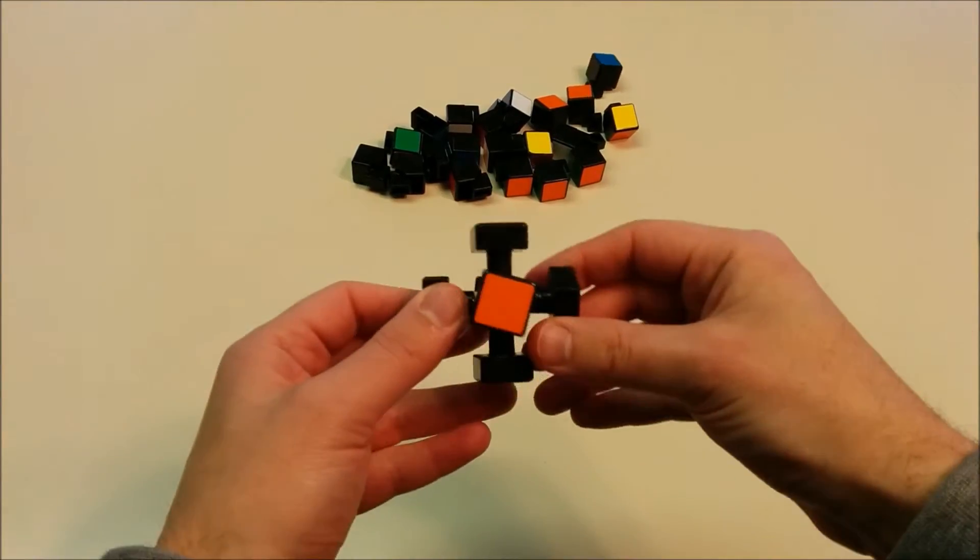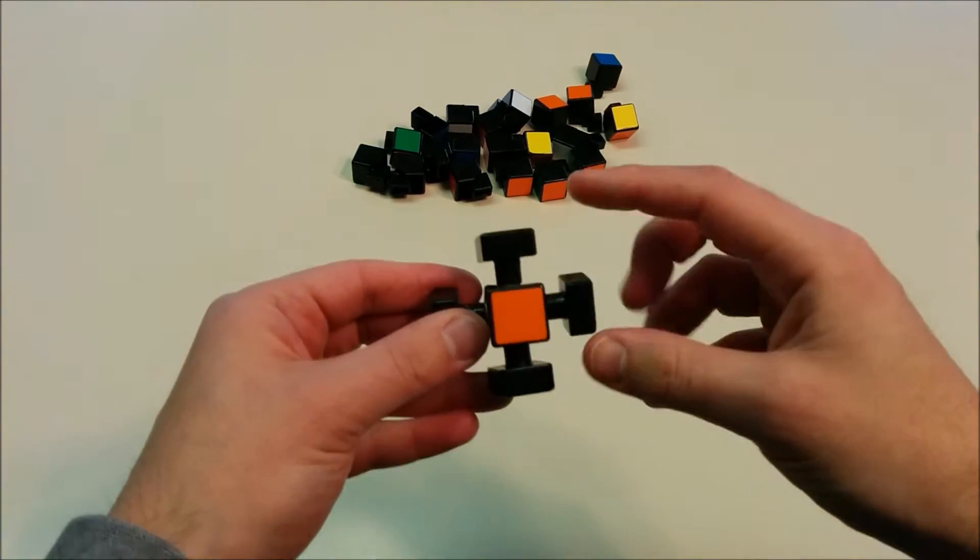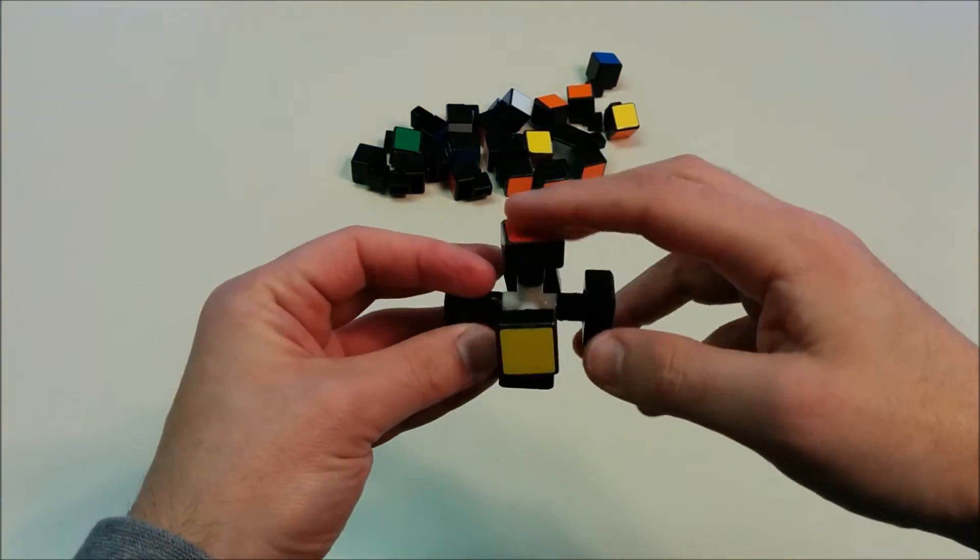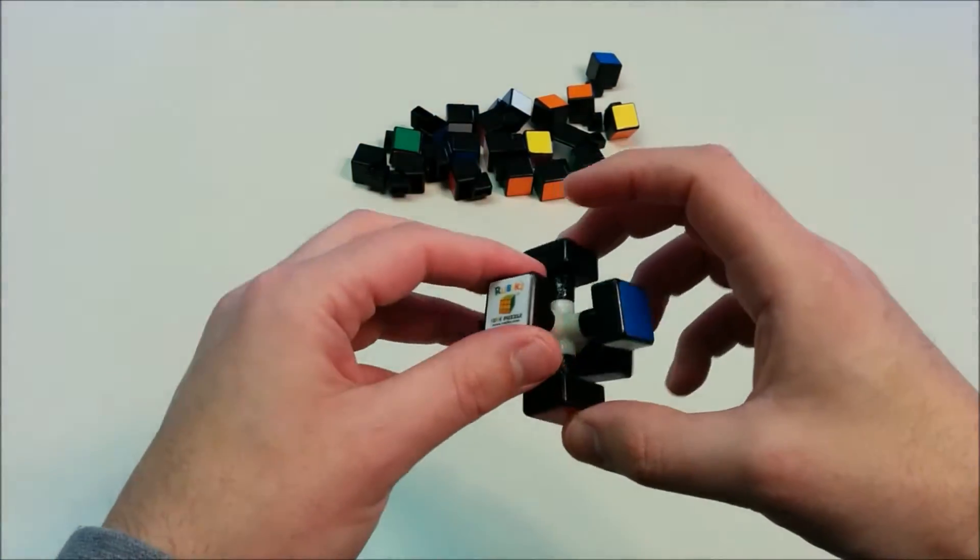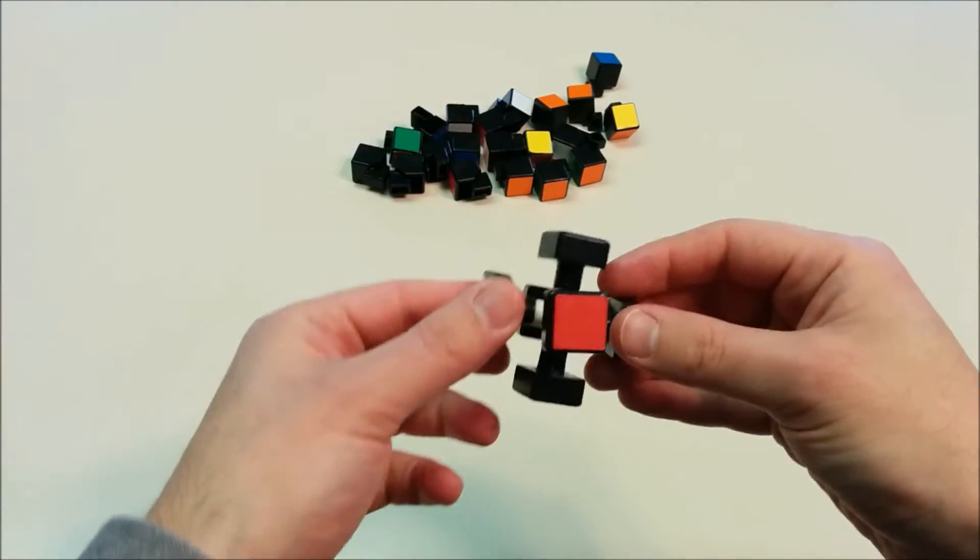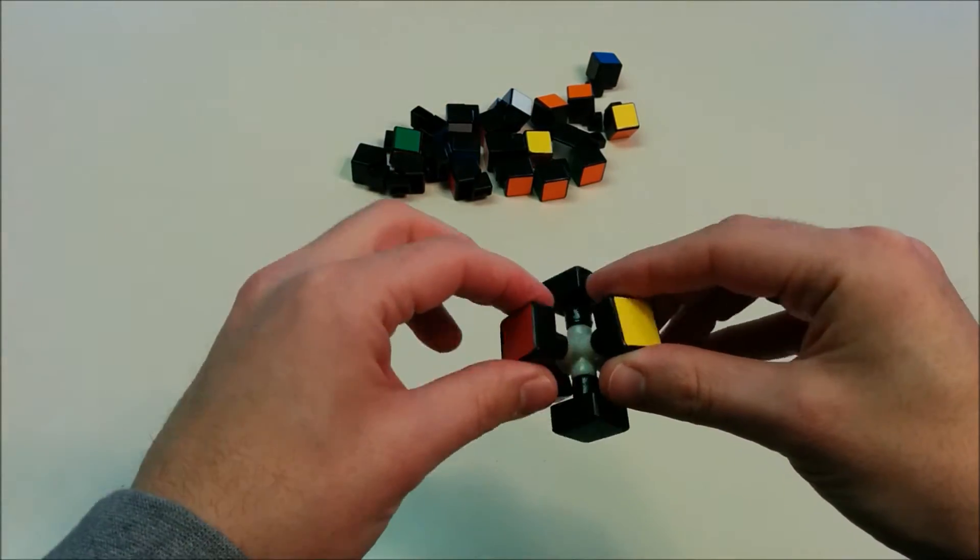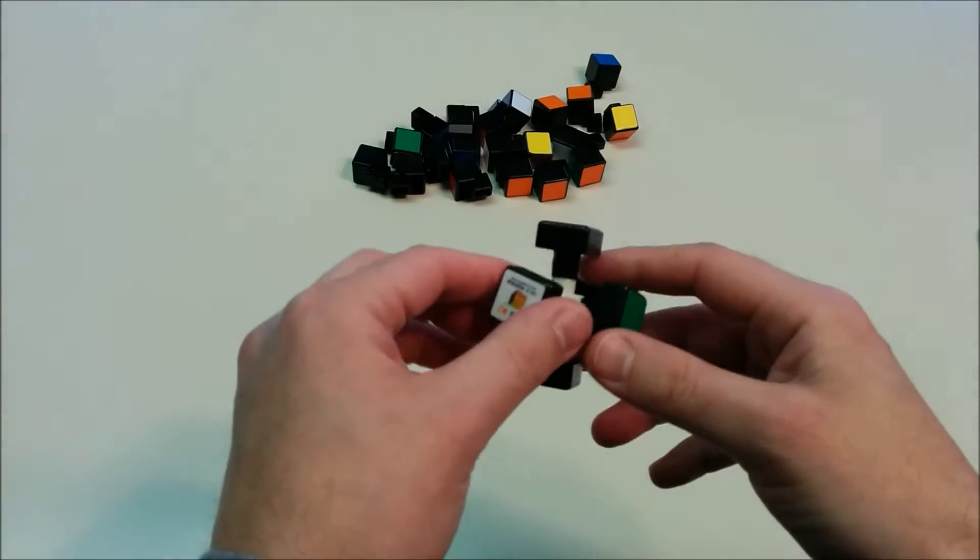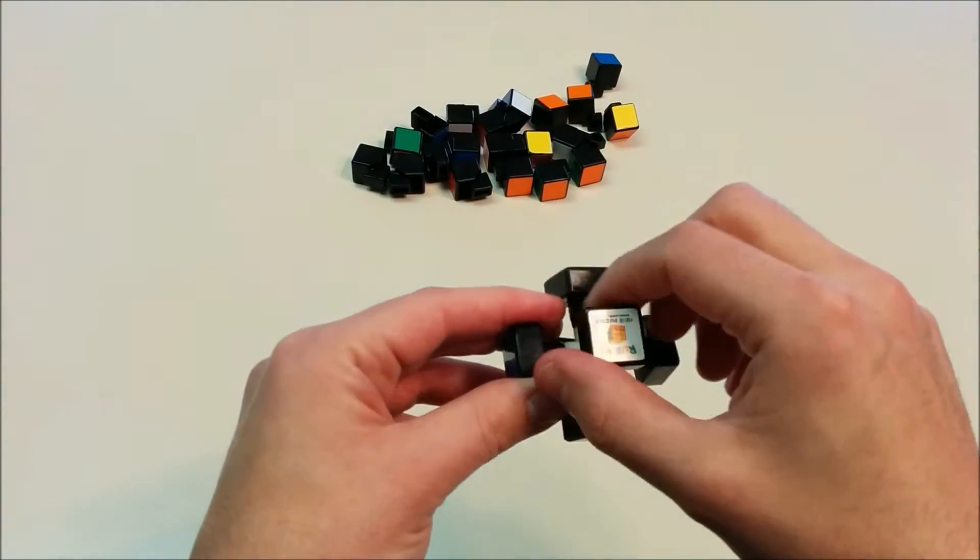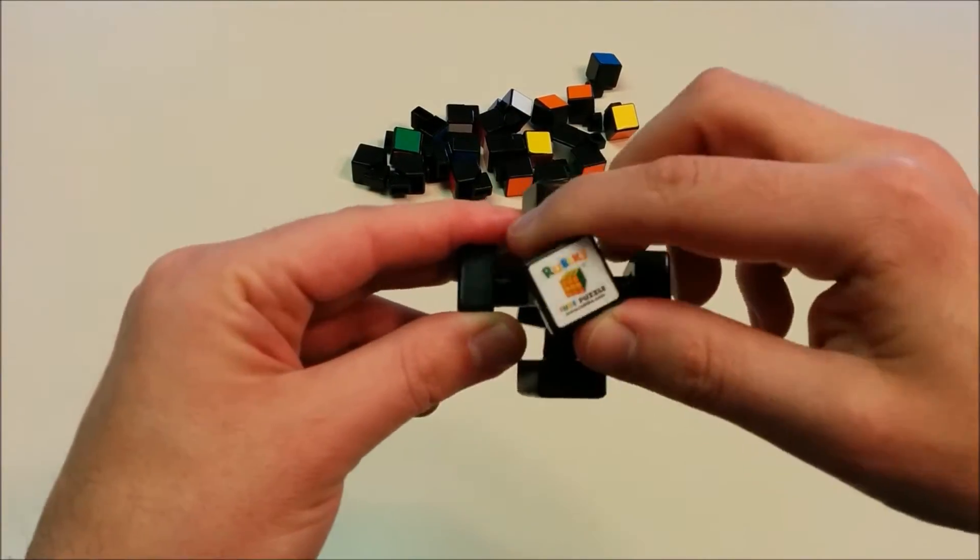There are six faces which have different colors, and these faces, what's important, is that they do not move. These pieces are completely fixed, and the point of solving the Rubik's Cube is you want to move the remaining pieces to match them.